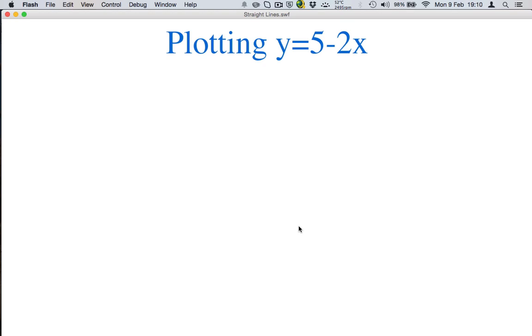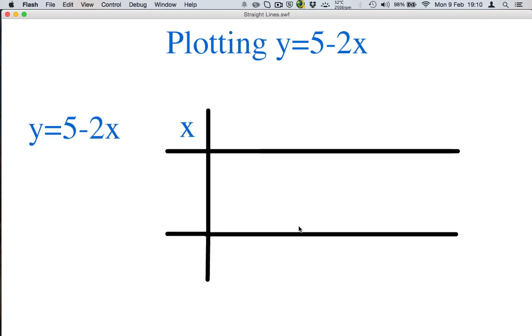We're going to plot the line y equals 5 minus 2x. So as always we'd start with our equation. And we've used that to construct the table. However, this isn't quite in the order that we've had it before. So we should change it so that it actually looks more like what we've been using.